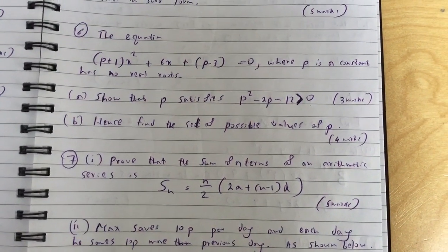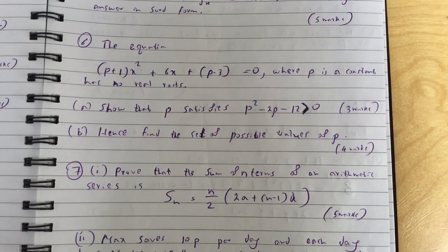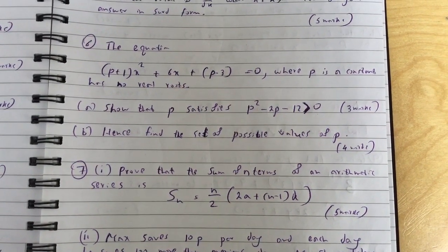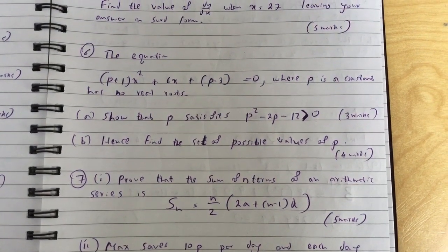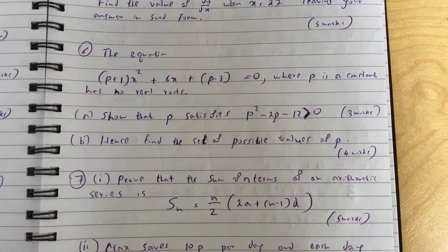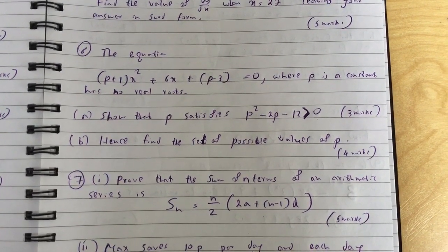Question 6: The equation (p+1)x squared plus 6x plus p minus 3 equals 0, where p is a constant, has no real roots. (i) Show that p satisfies p squared minus 2p minus 12 greater than 0. (ii) Hence find the set of possible values of p.